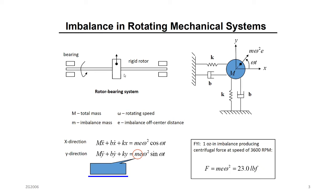This is a simple rotor-bearing system. This is the mass of the rotor, supported on two bearings through a rotor shaft. When we simplify the model into a mass-spring-damper system, this is the mass of the system. The bearings can act as a damper and stiffness.